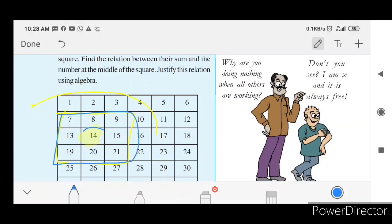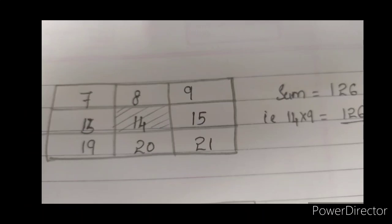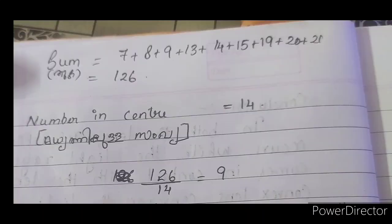We have our 9 numbers selected. We are going to find the total sum. The total sum is 126. The center number is 14. So the total sum equals 126, and the center number is 14.